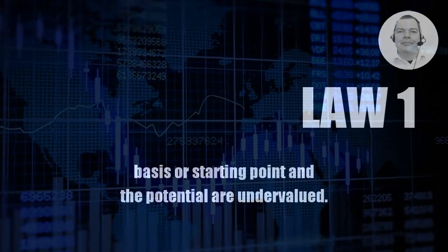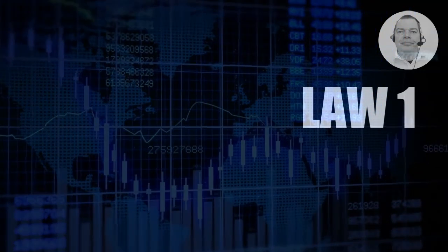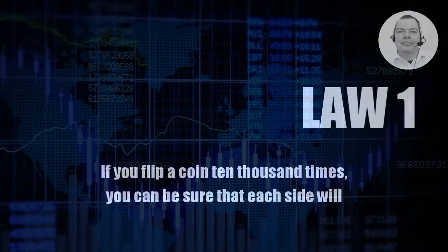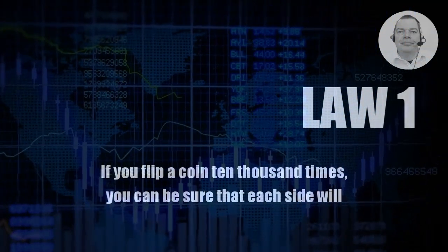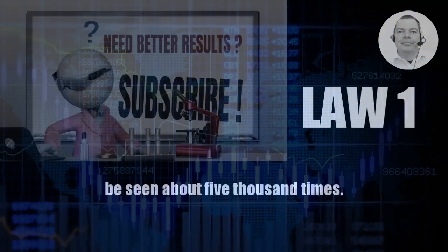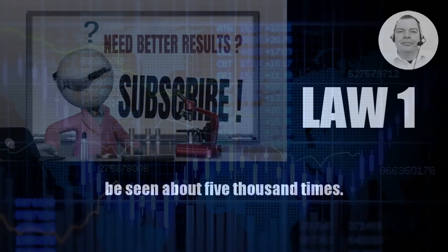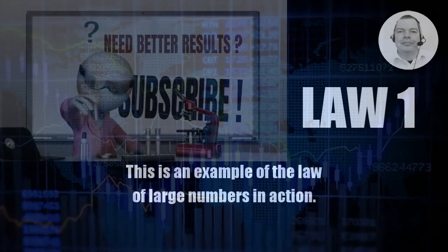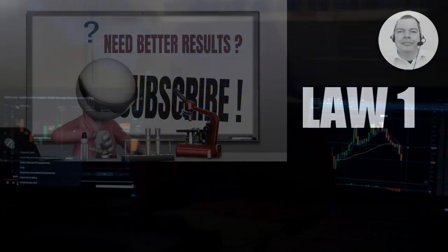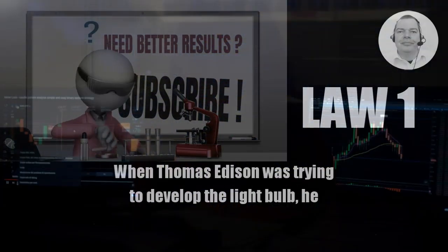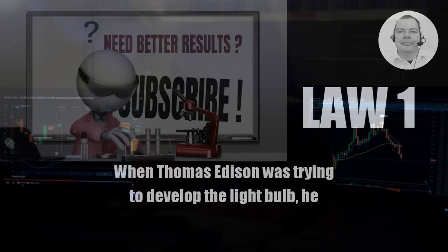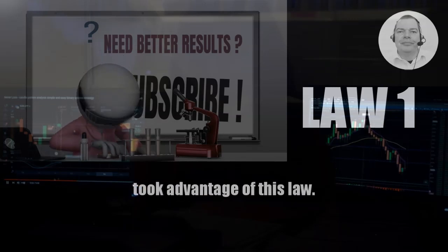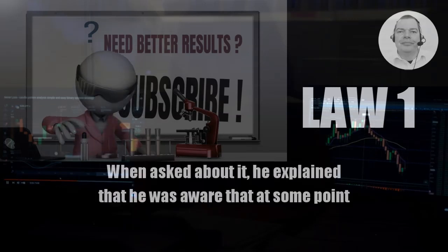If you flip a coin ten thousand times, you can be sure that each side will be seen about five thousand times. This is an example of the law of large numbers in action. When Thomas Edison was trying to develop the light bulb, he took advantage of this law.